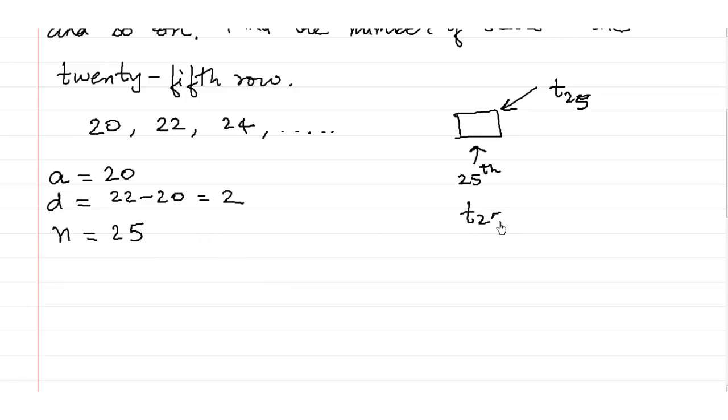So we shall use the formula for tn. tn is equal to a plus n minus 1 times d. Therefore t25 is equal to a is 20, so 20 plus n is 25, so 25 minus 1 into 2.